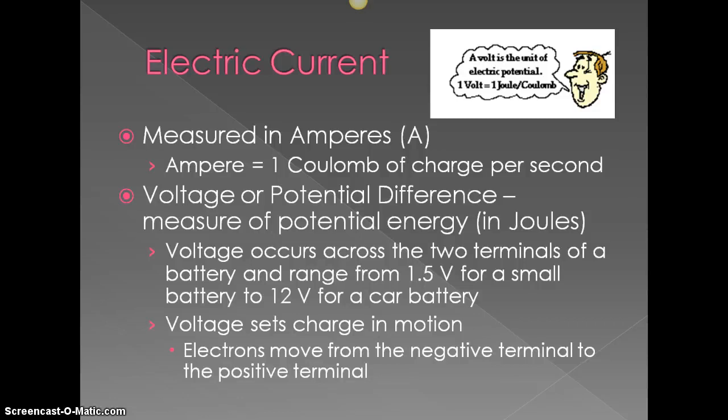Voltage or potential difference is a measure of the potential energy in joules. Voltage occurs across the two terminals of a battery. So when we're going from the positive to the negative end, that's your voltage or potential energy that's there. Batteries can range from 1.5 volts, and we'll work with that in a little bit in a virtual lab that we're going to do, for a small battery to a 12 volt for a car battery.